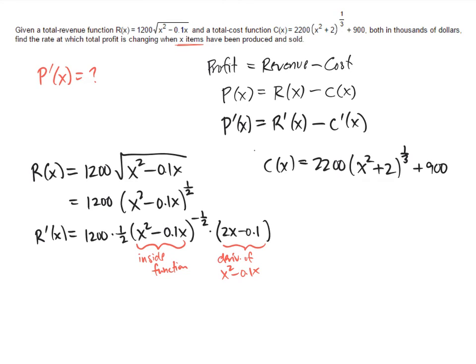What's my formula for c prime? Well, similarly, the 2200 is a constant multiple, so that's just going to stay there. Using my extended power rule, I bring down the 1/3. I leave the inside function alone. Take that power 1/3 and subtract 1. That gives me negative 2/3.